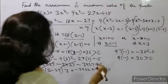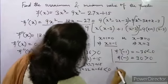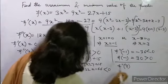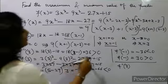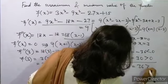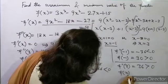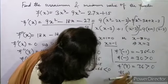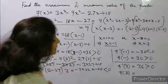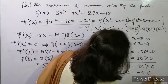So to summarize: for x = -1, f(-1) = 30 (maximum). For x = 3, f''(3) = 36 (greater than 0) and f(3) = -66 (minimum value).